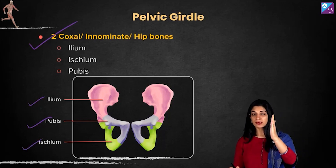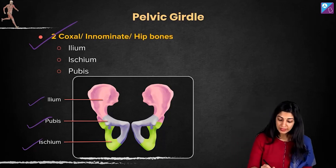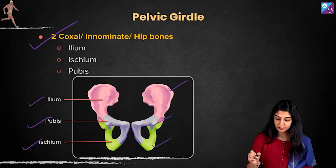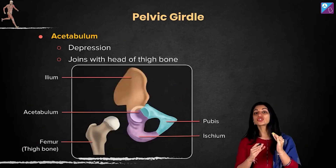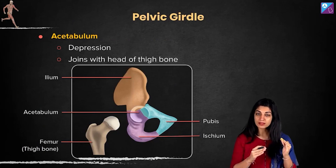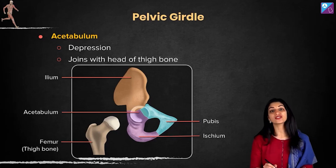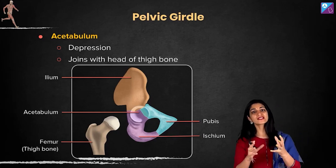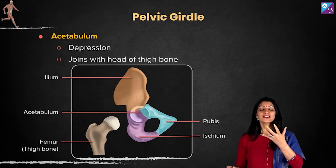Pens up, everybody — write down: hip bone consists of ileum, pubis, and ischium. Now, at the junction of these three bones — look at the screen please — there is a depression. Let's first understand what a cavity and a depression are.